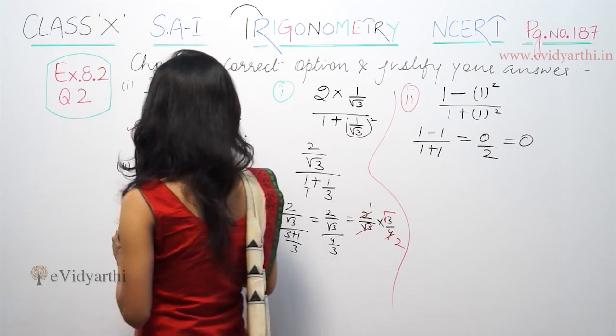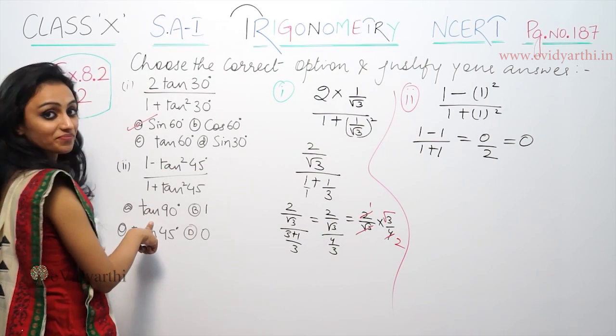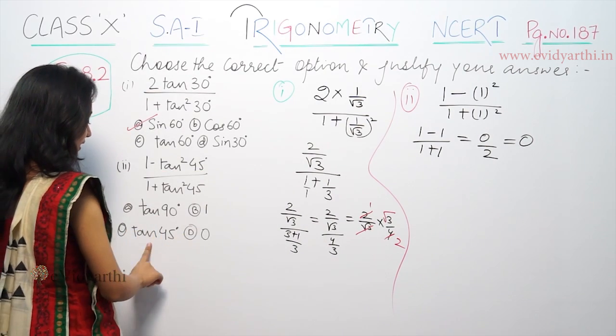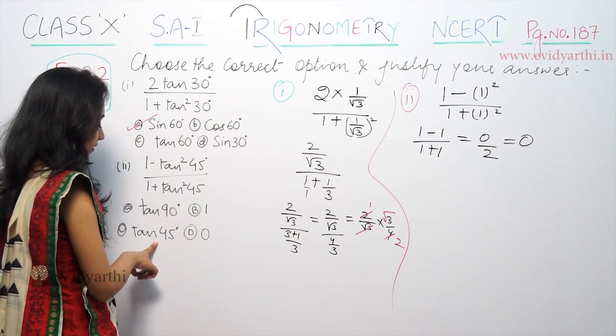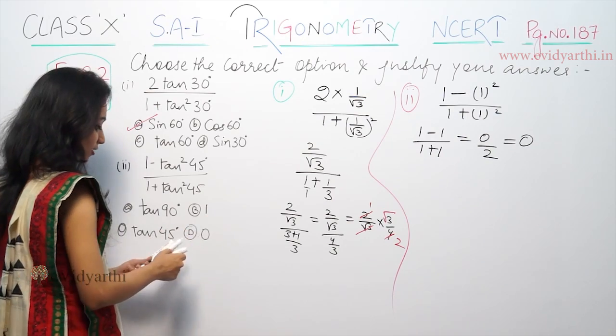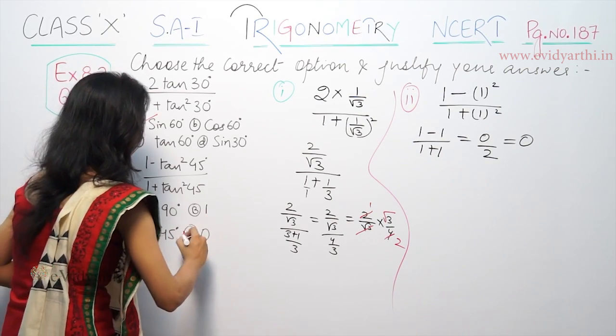0 is the answer. Tan 90 is infinite, tan 45 is 1. So 0 is the correct option.